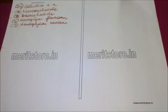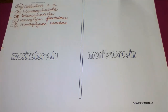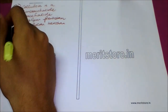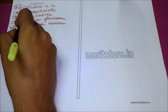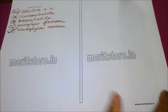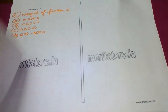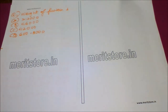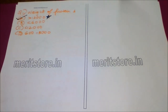Our next question is: cellulose is — Option A: a monosaccharide, Option B: a disaccharide, Option C: homoglycan pentosin, and Option D: homoglycan hexosan. The answer is Option D: homoglycan hexosan.